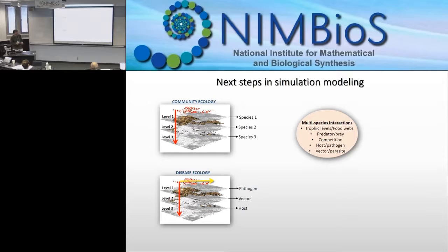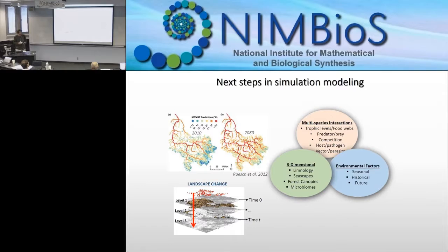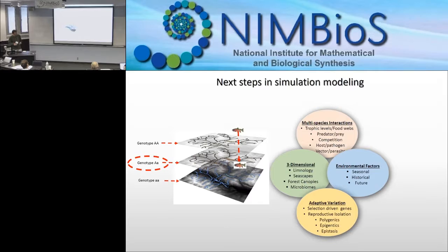Community ecologists do simulations right now, but there's still room for growth in community ecology. Areas include dealing with three-dimensional matrices in marine and aquatic environments, looking at temporal changes in the environment instead of static environments, and adding in polygenic inheritance and more complicated epistatic and epigenetic processes — which are certainly possible and a reasonable next direction.